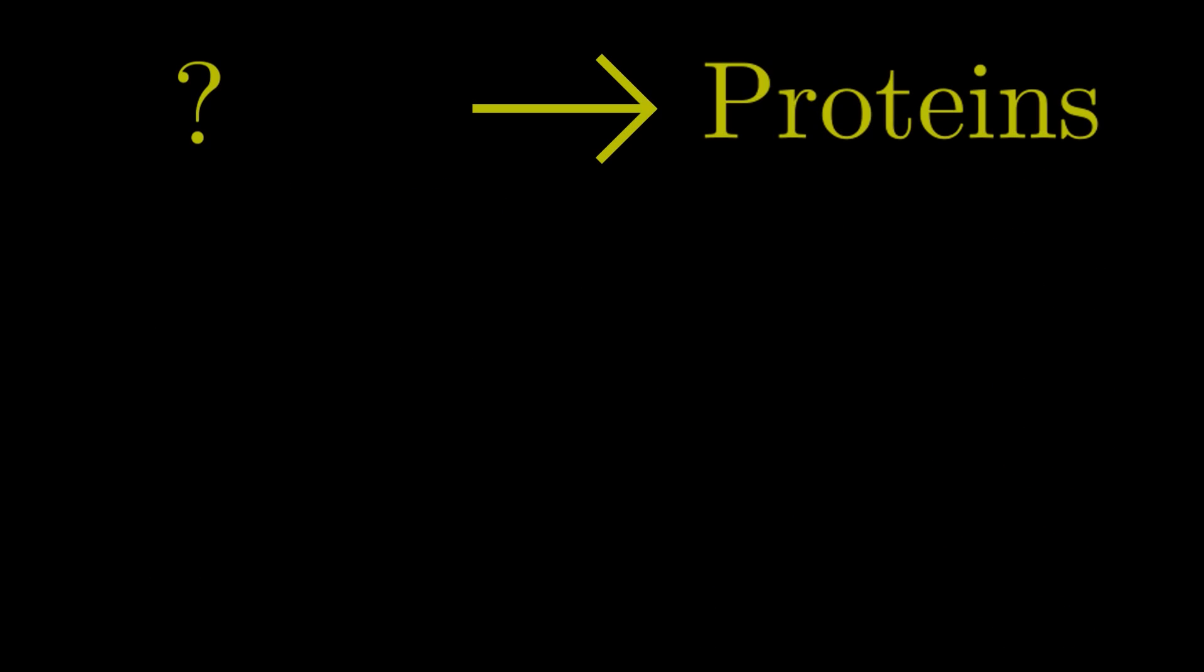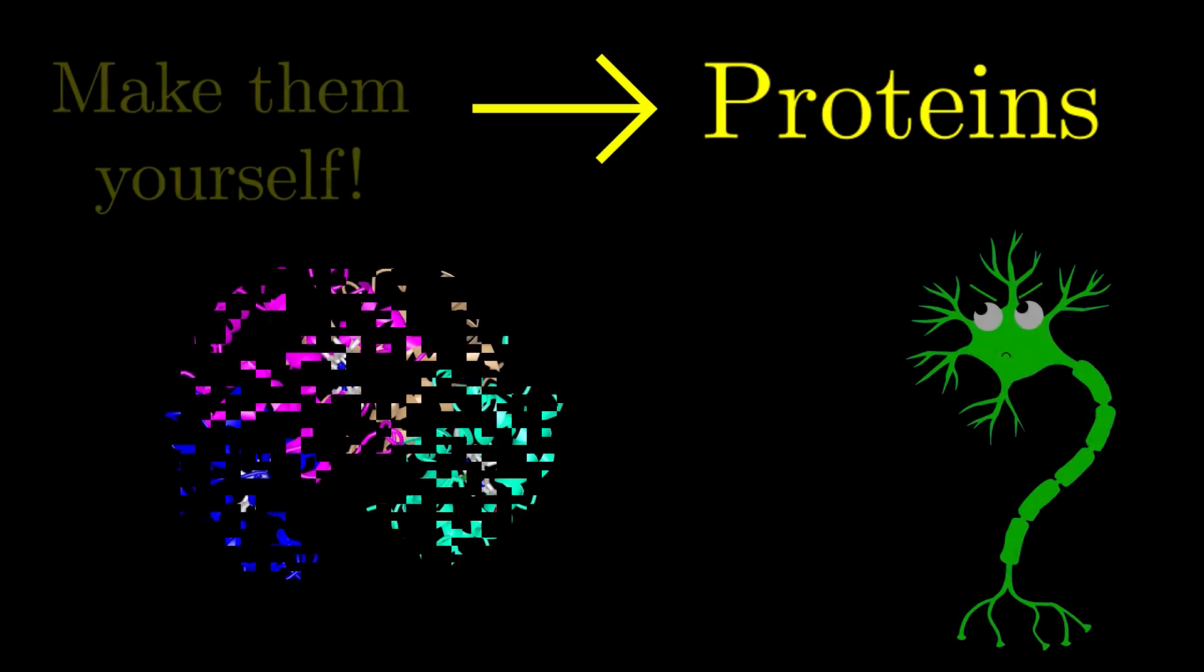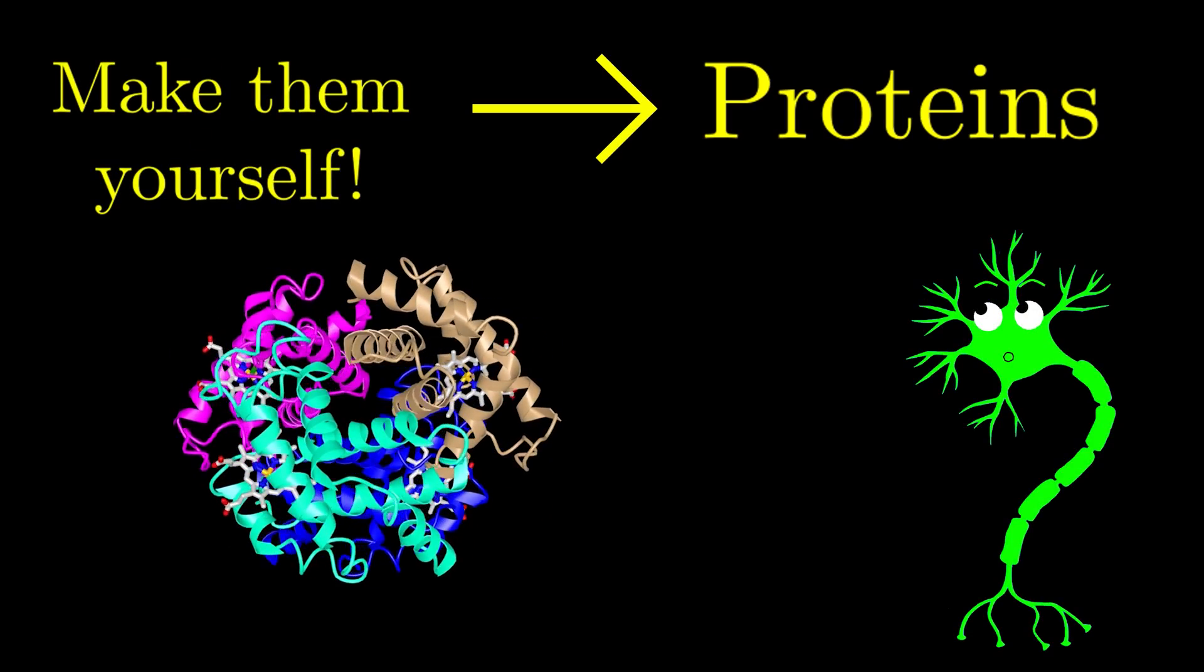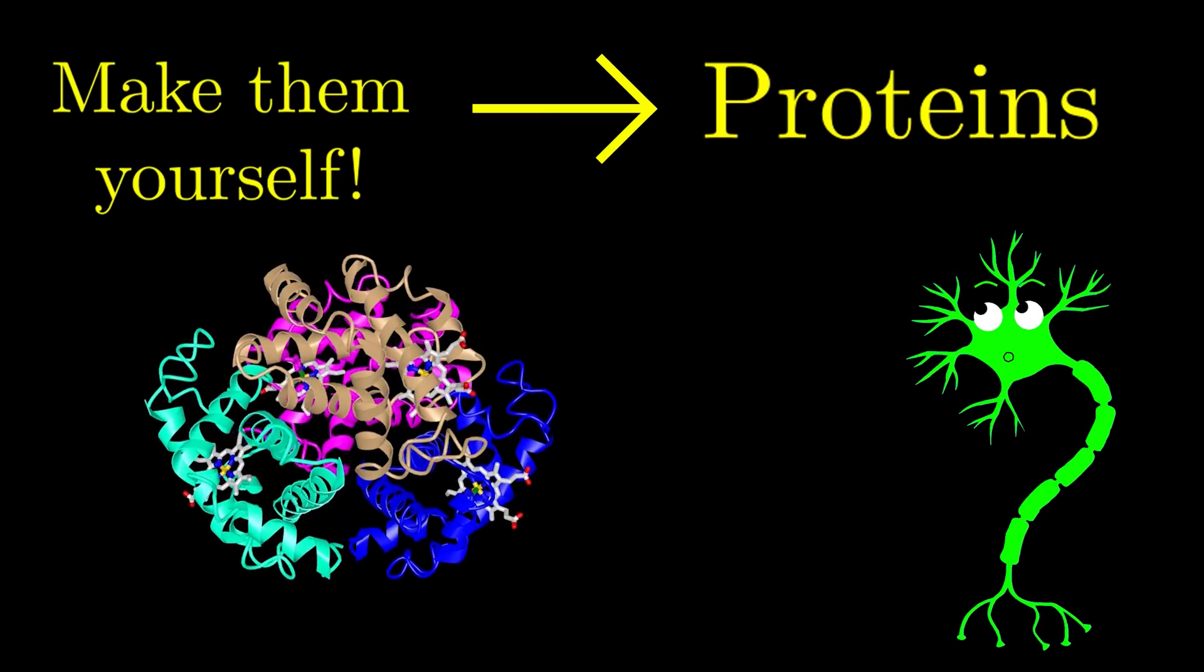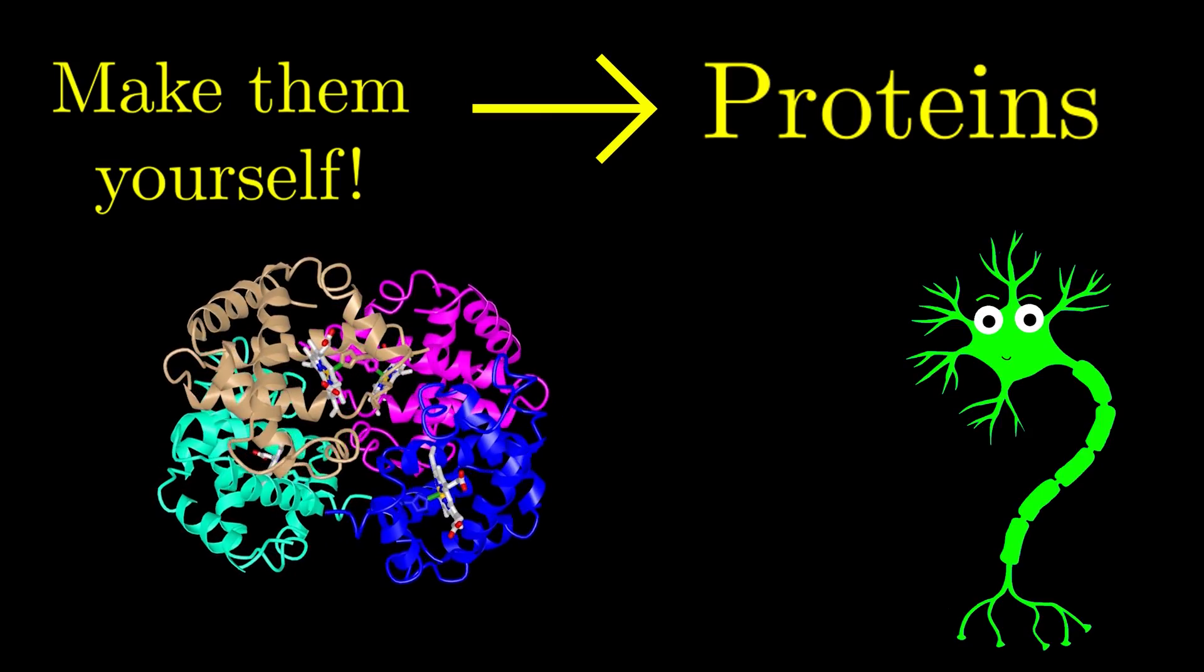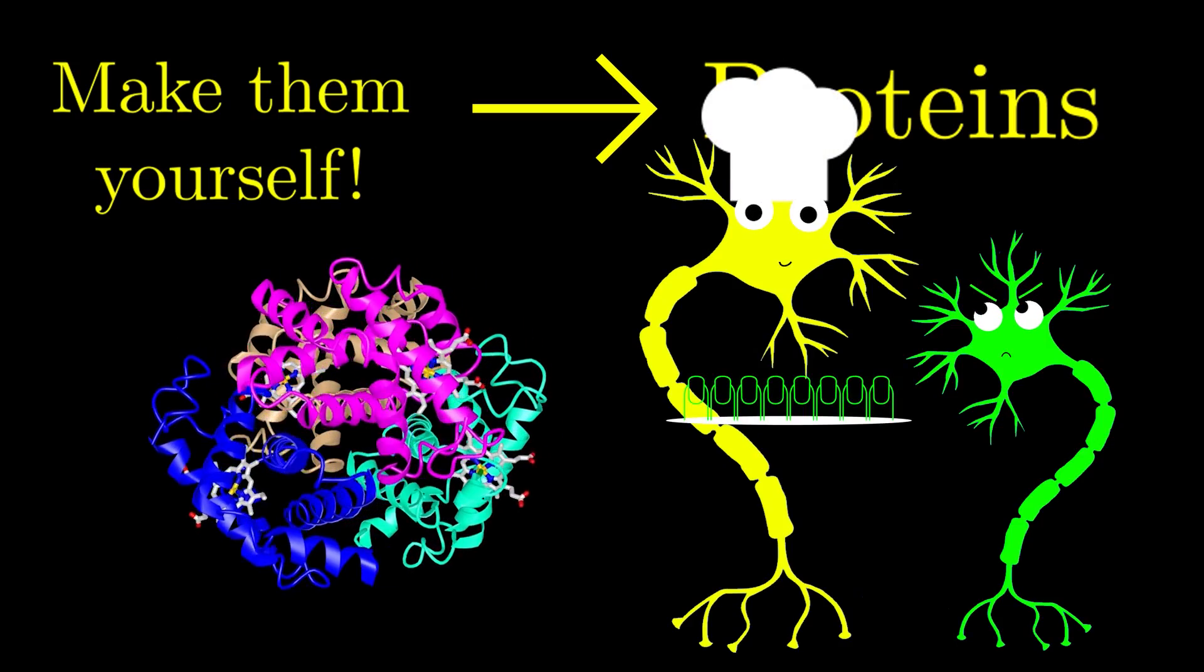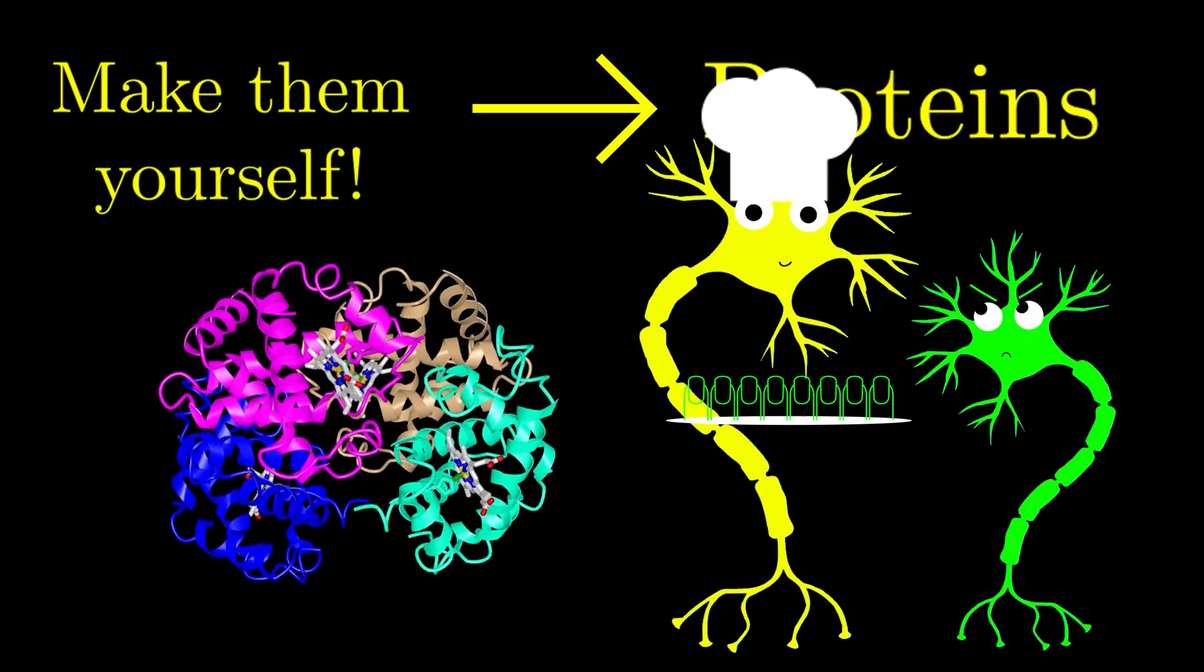So that leaves the other possible answer. Our body makes the proteins itself. It makes sense that there might be some way for our body, and life in general, to build proteins from scratch. That way, you wouldn't have to eat the keratin protein in order to grow fingernails. Your body would just synthesize the keratin protein itself.